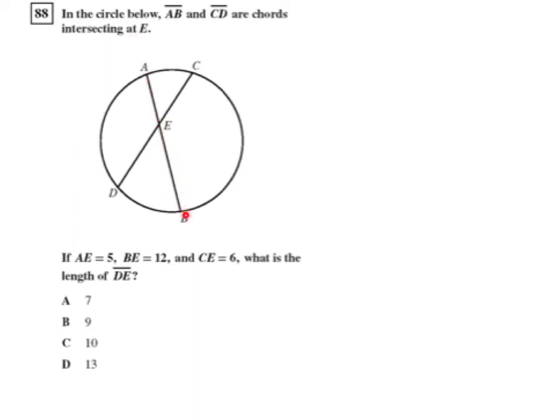AB is a chord, line segment CD is a chord, intersecting at point E. If AE equals 5, BE equals 12, and CE equals 6, what is the length of DE?